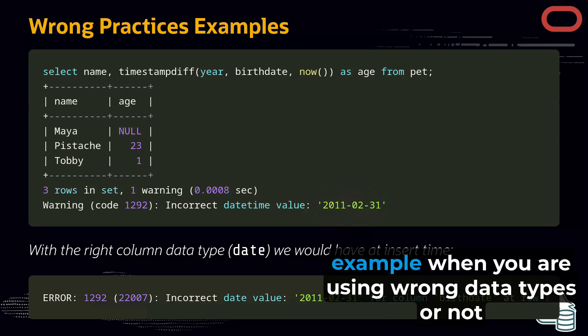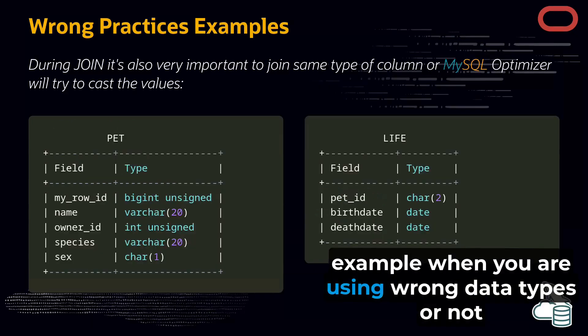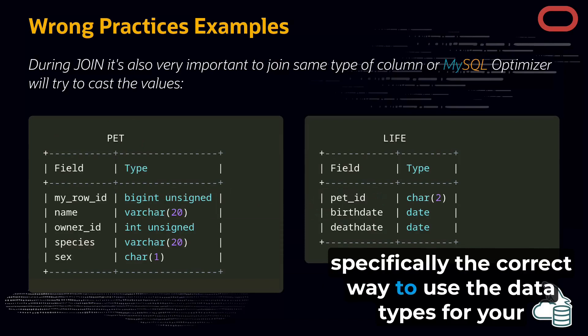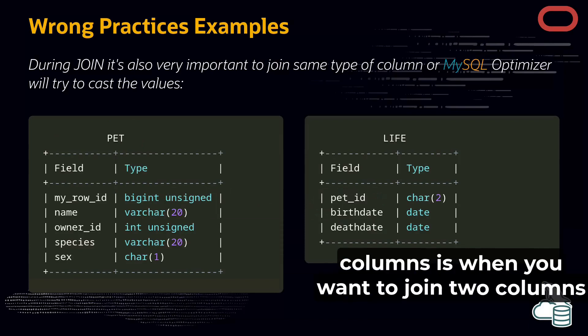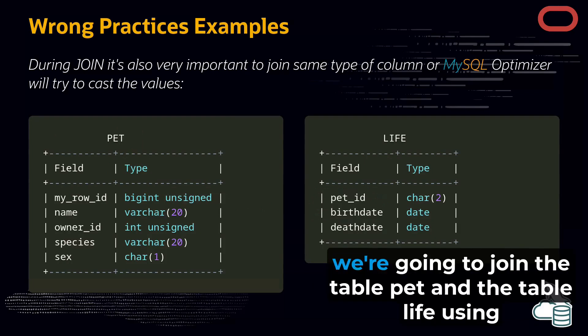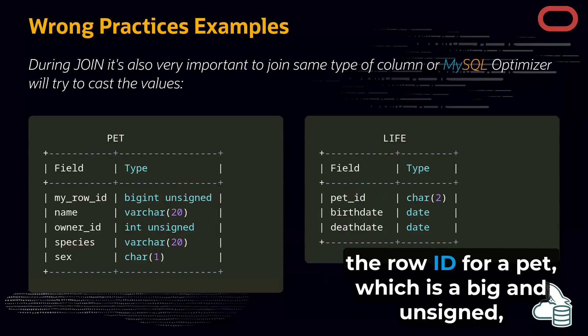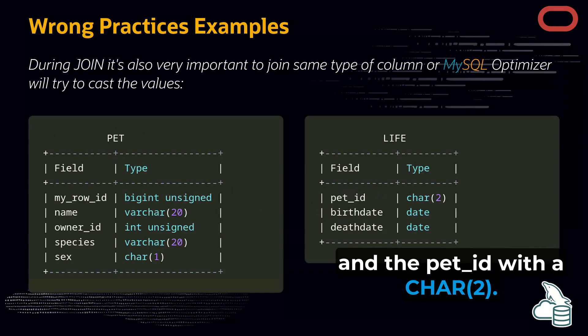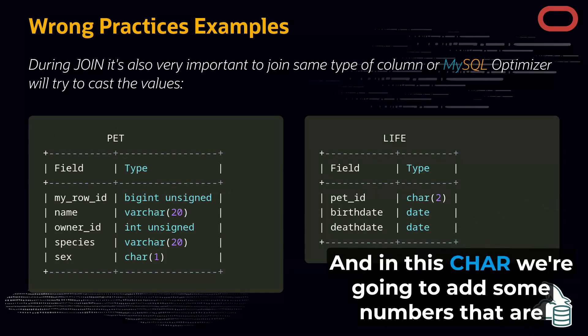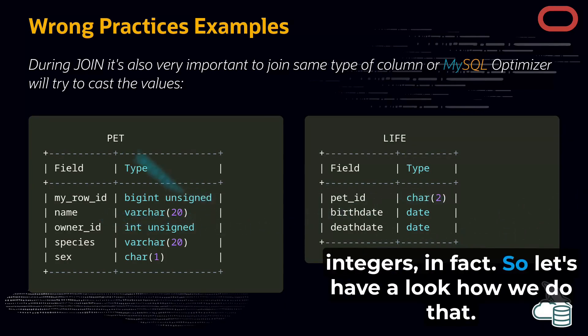Another bad example when you are using wrong data types is when you want to join two columns with different data types. In this case, we're going to join the table pet and the table life using the row ID for a pet, which is a BIGINT unsigned, and the pet ID with a char 2. And in this char 2, we're going to add some numbers that are integers, in fact.